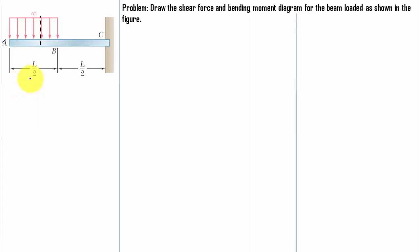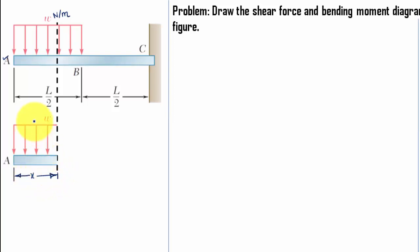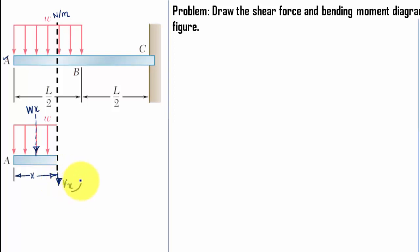We have a section and we'll be considering the left-hand side portion of the beam. This UDL has a magnitude of W Newton per meter. The section is at a distance of X meters from the left-hand support. Converting this UDL into a point load: in one meter it's W Newton, so in X meters it's going to be equal to W·X. At this cross-section we have shear force downwards and bending moment anti-clockwise. This is sectioning between A and B.